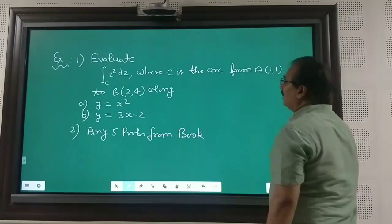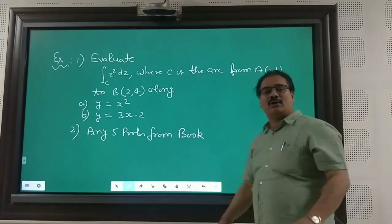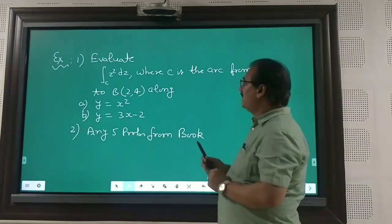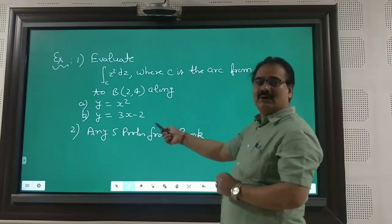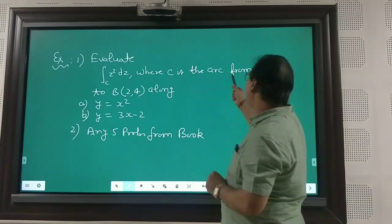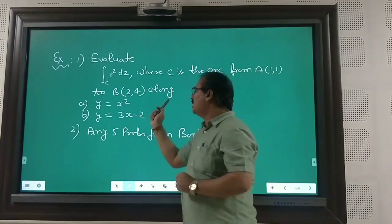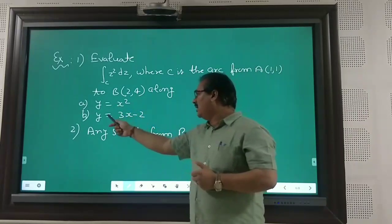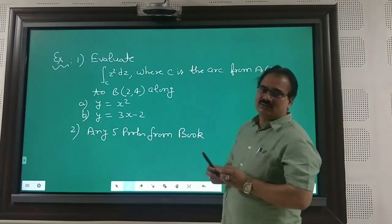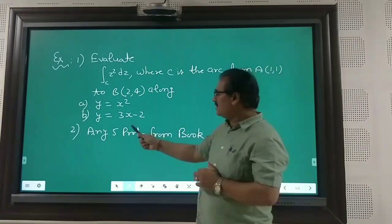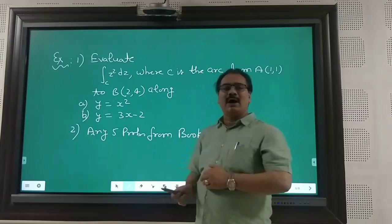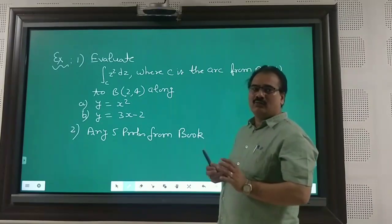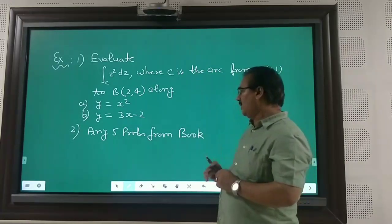Now, this is the assignment problem for all students: evaluate the integral ∫_C z² dz, where C is the arc from A(1,1) to B(2,4) along the parabola y = x², and also along the line y = 3x − 2. In addition, attempt any five problems from any book you have on the same topic.